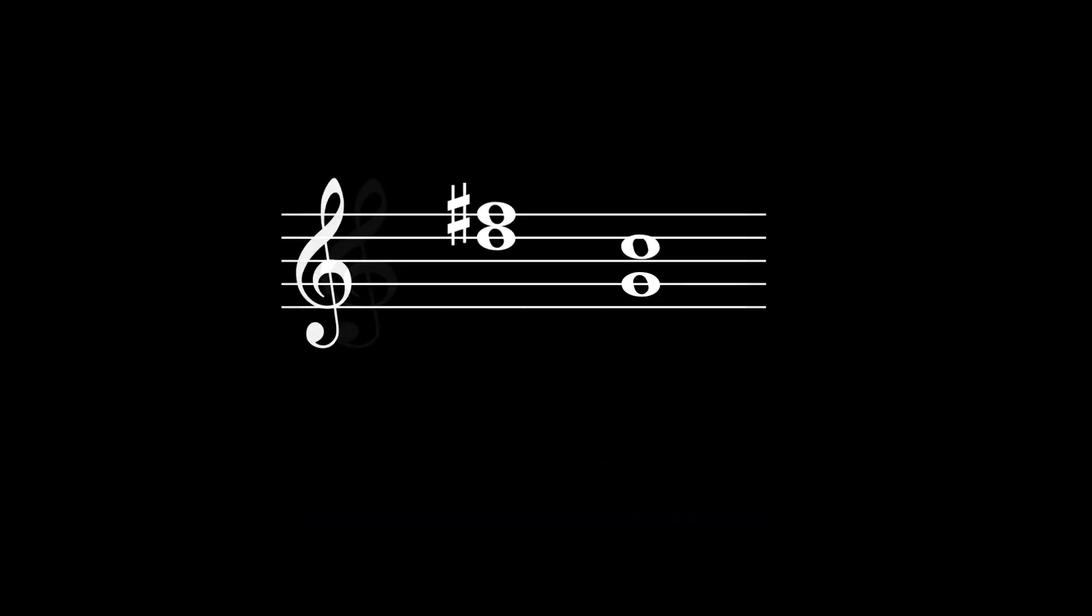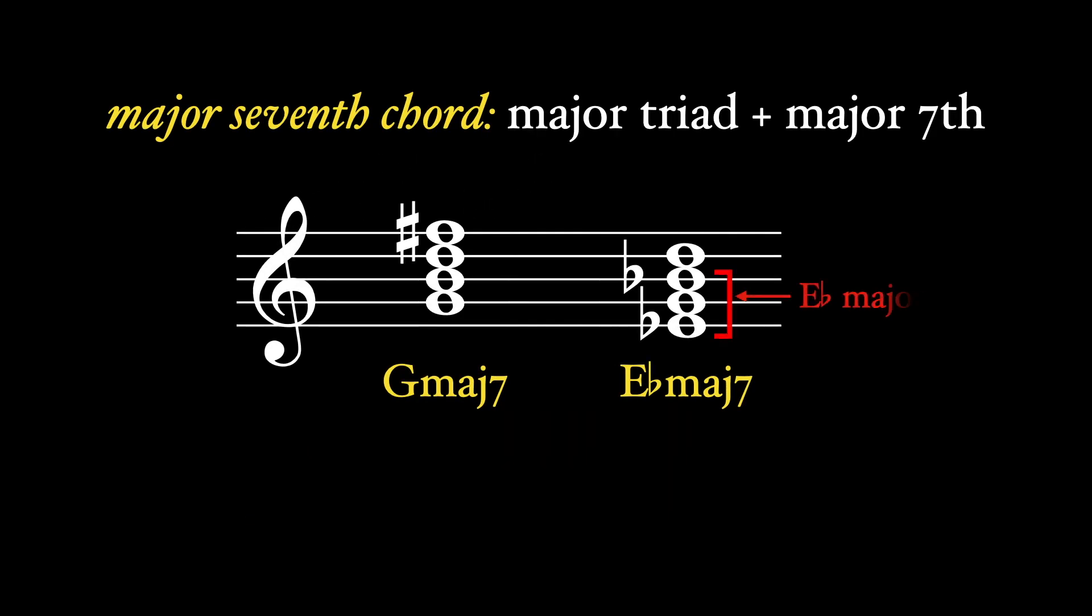Here's another major seventh chord, an E-flat major triad plus a major seventh above E-flat, which creates an E-flat major seventh chord. In lead sheet notation, we usually write MAJ7 after the root, but you might also see a triangle in some jazz chords or just a capital M.